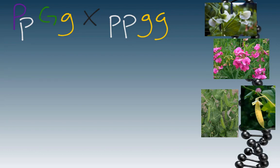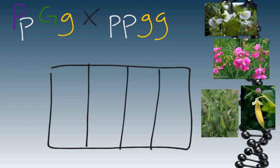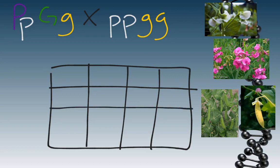Now we're going to need a larger Punnett square for this. Instead of just using four boxes, we have to use 16. So I'm going to draw my Punnett square with three lines in the middle — giving me four sections going up and down — and three lines going across, giving me a total of 16 boxes.